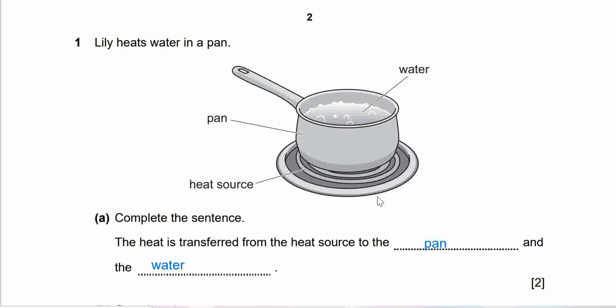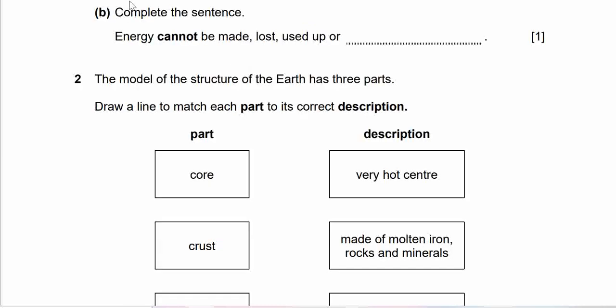Question 1b: Complete the sentence - Energy cannot be made, lost, used up, or what? Get your answer ready, try to remember. Pause this video if you need time to think. The answer is energy cannot be made, lost, used up, or destroyed. It cannot be created nor destroyed.